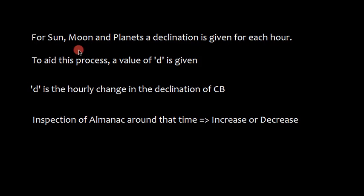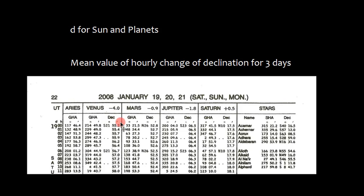For Sun, Moon and planets, the declination is given for each hour. To aid this process, a value of D is given. D is the hourly change in the declination of a celestial body. Inspection of almanac around that time will tell you whether the value is increasing or decreasing and accordingly it is added or subtracted. For example, this is the GHA, this is declination and this is given on hourly basis. So it will inform you whether it is increasing or decreasing. Basically, D is the mean value of hourly change of declination for three days.